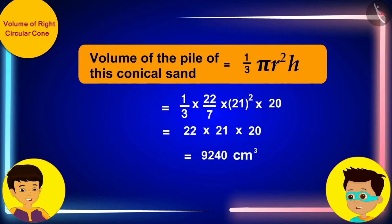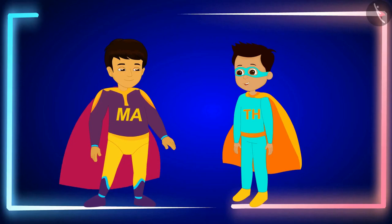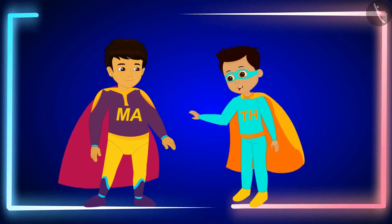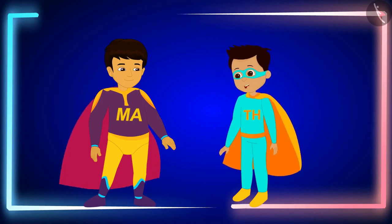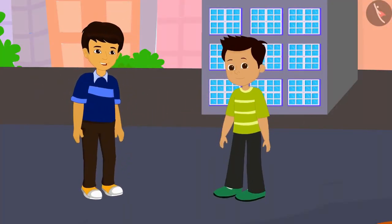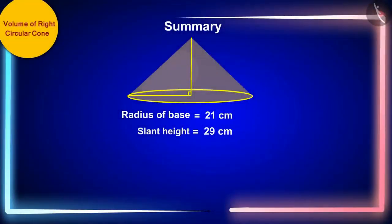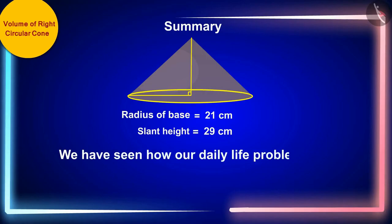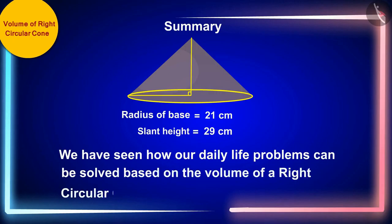Thomas, we got our answer. A bag of sand has 9,240 cubic centimeters of sand. Well done! Now, let us return to our world. Then we will go to play at your house. With this example, we have seen how our daily life problems can be solved based on the volume of a right circular cone. In the next video, we will see an interesting example based on this. We'll see you next time.